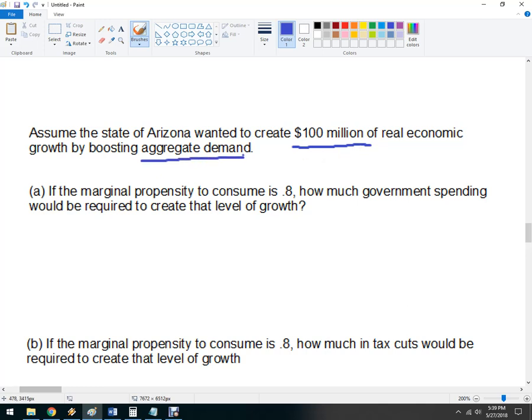We need to increase growth by $100 million. So, that's what we want to get. So, our target is $100 million. It's going to be the fiscal spending multiplier times the amount of spending. So, from here, I've got the marginal propensity to consume, so I can figure out the fiscal spending multiplier, and then just algebraically figure out what this is.